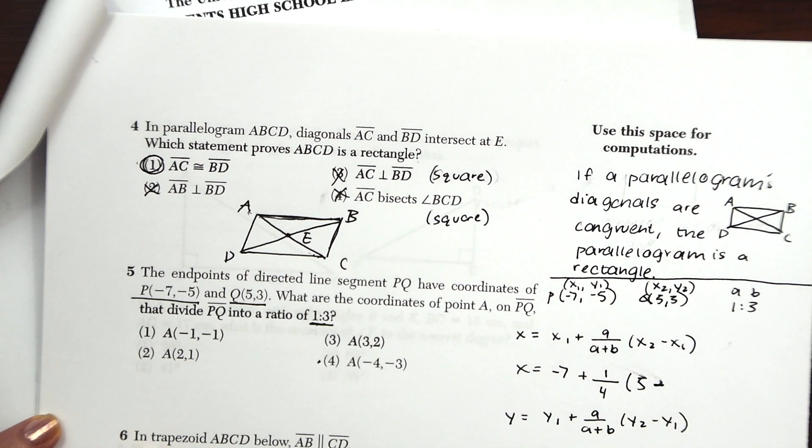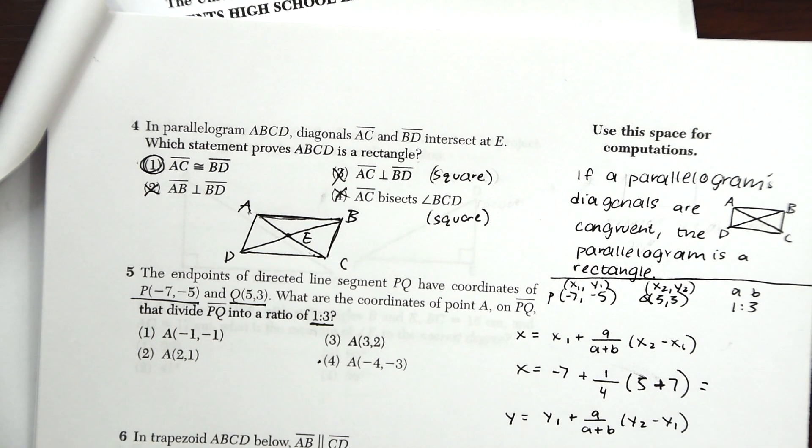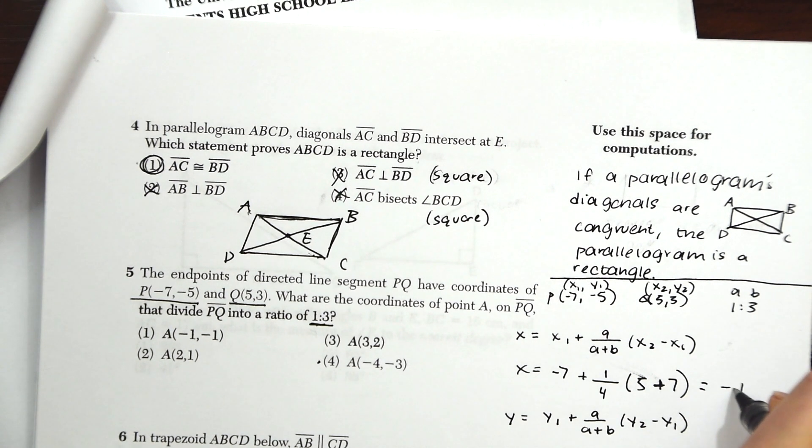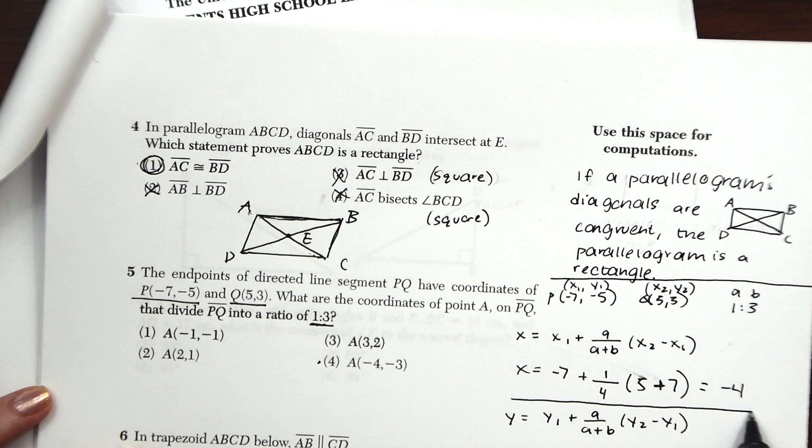So since it's minus negative 7, it's really like plus 7. So when you work all of this out, you end up getting minus 4. You could just plug that in your calculator or do this step by step, whatever works for you.